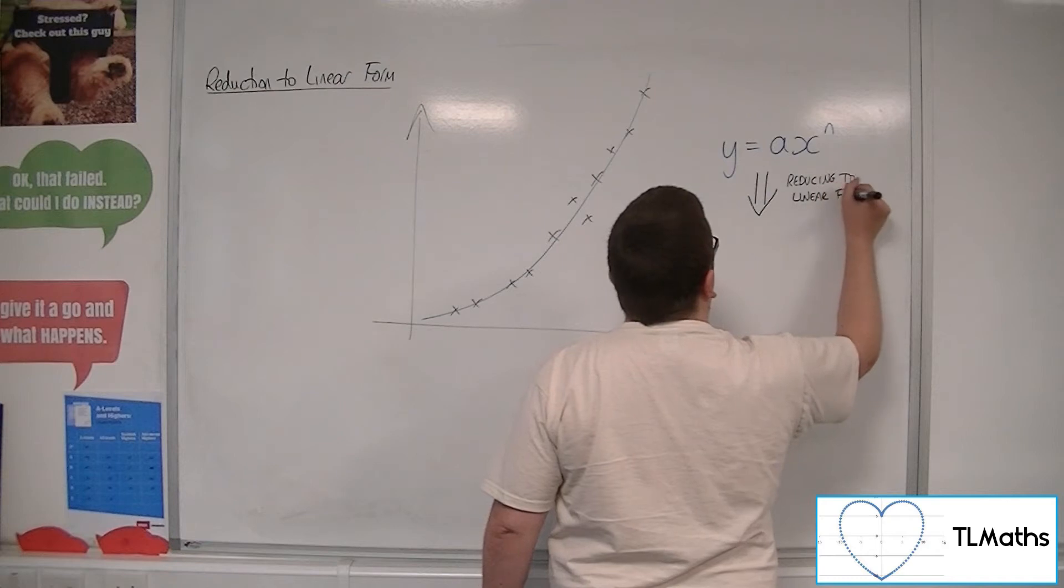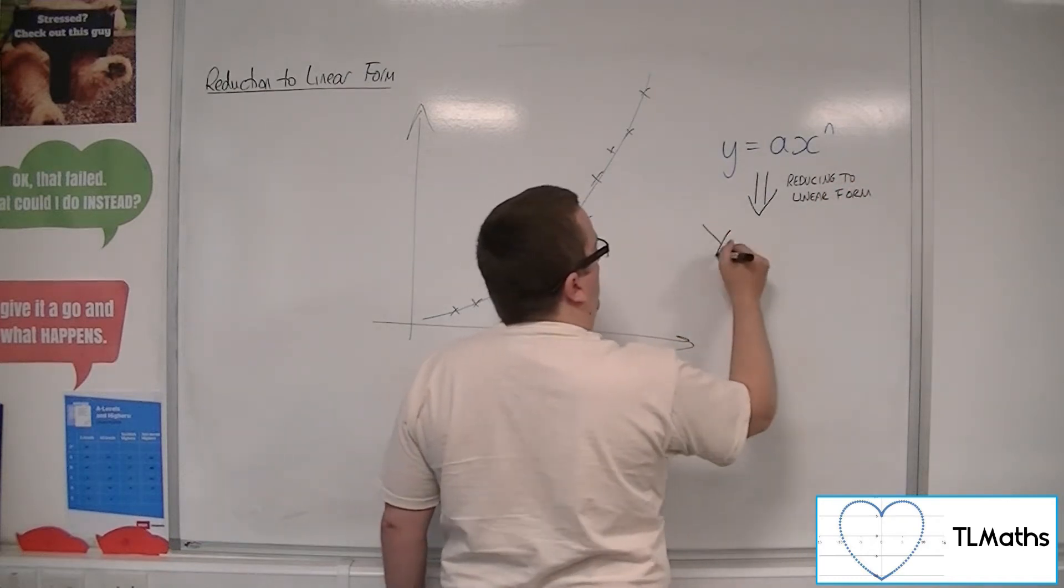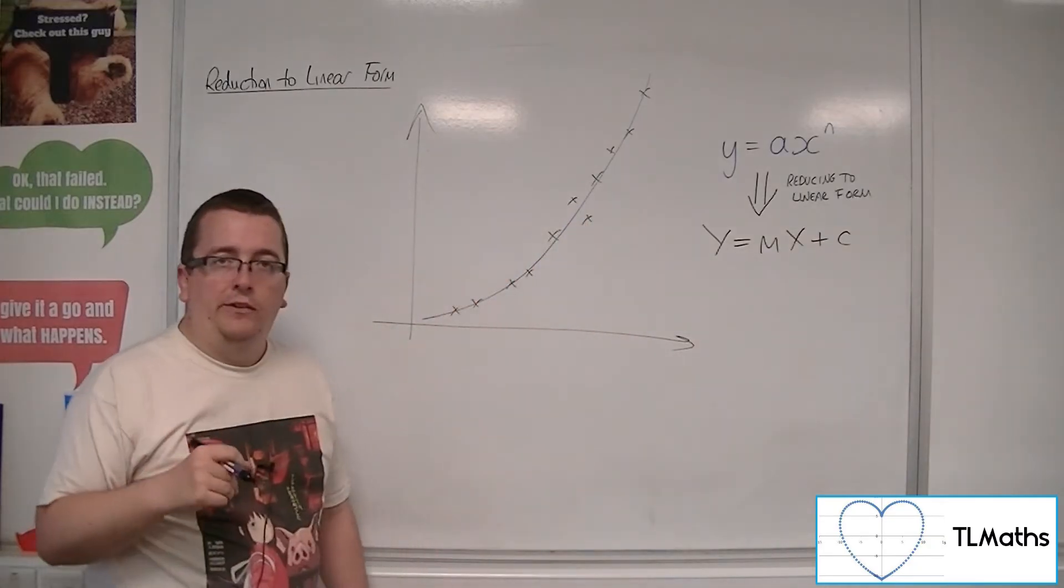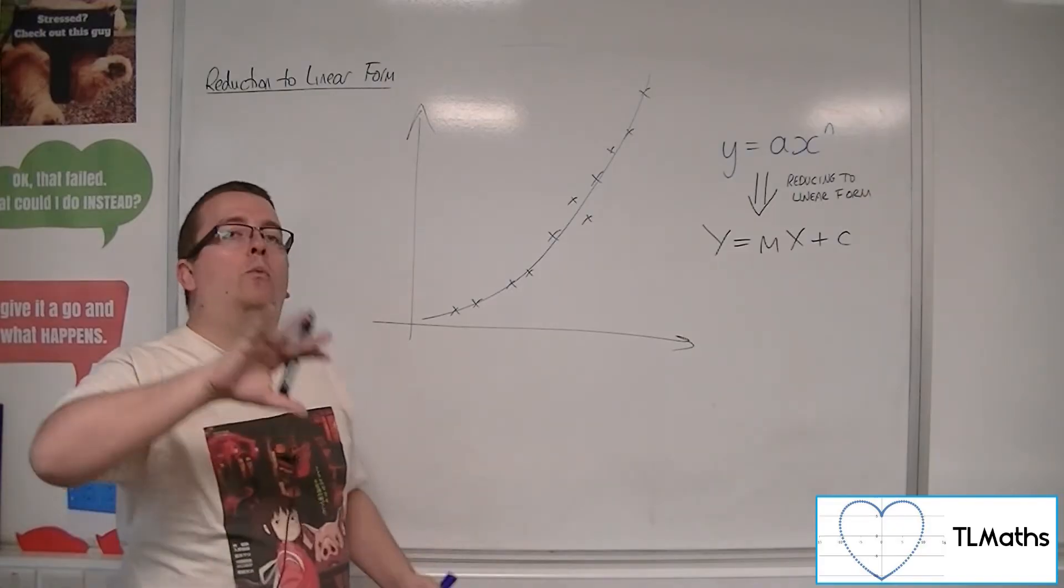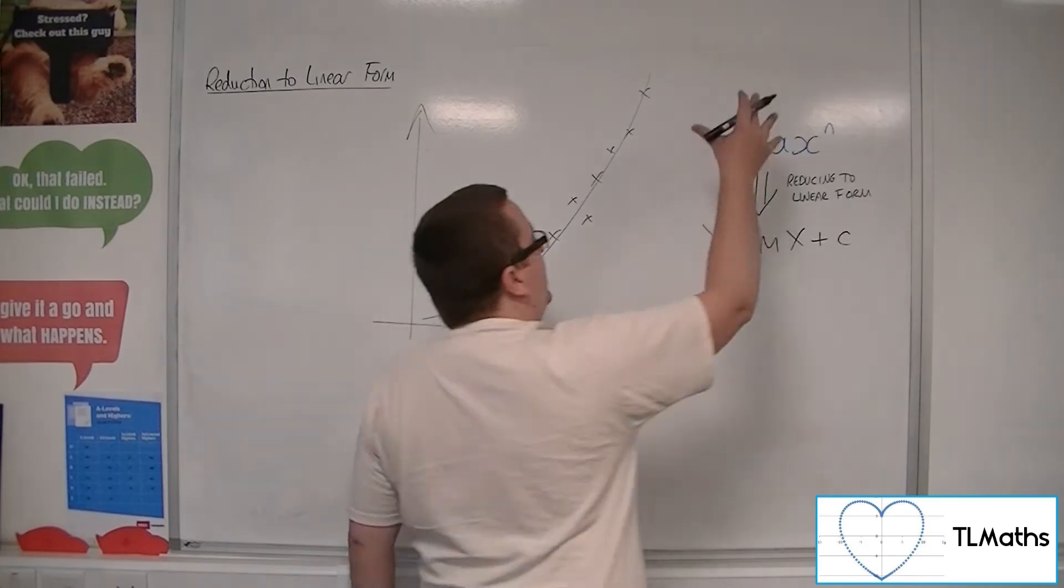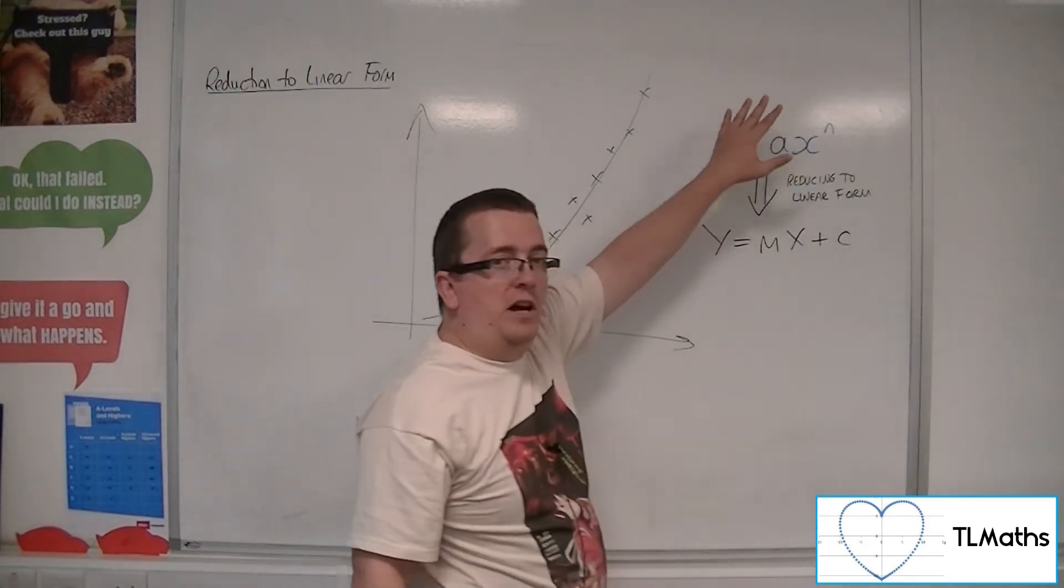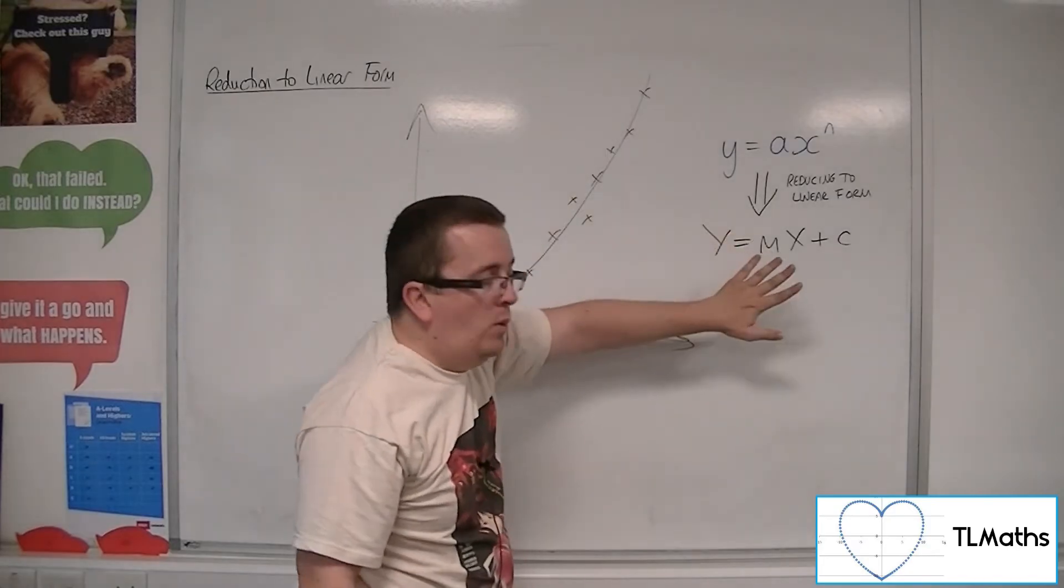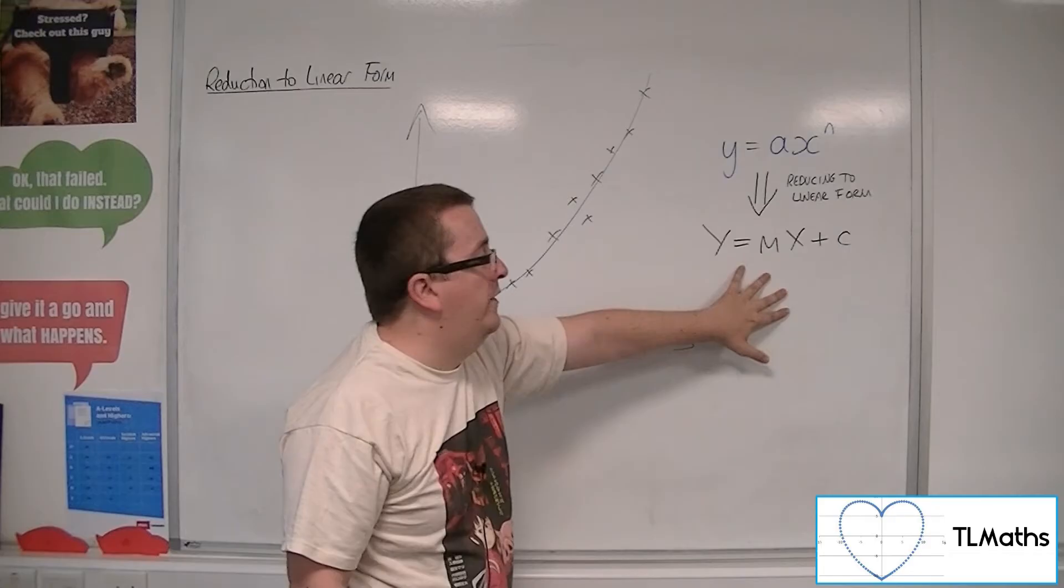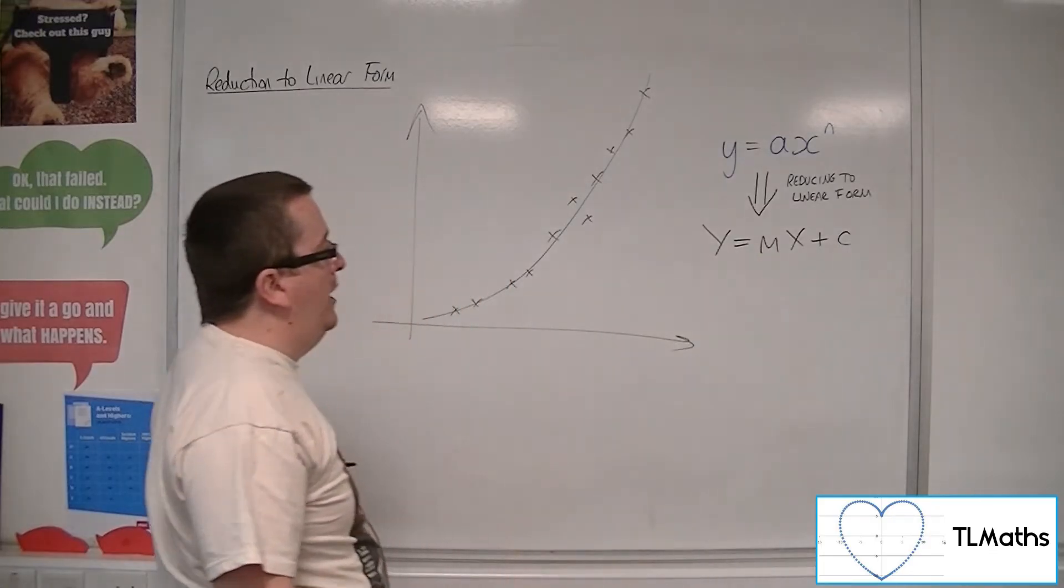So what you're going to get is something that might look like this, some kind of y equals mx plus c, a straight line equation. That's what we would be hoping. If you can get from that to that, and I'm not saying that every equation that you start with, every curve, you can get to y equals mx plus c. There are some that do, and this is one of those cases. So you get to a straight line equation.